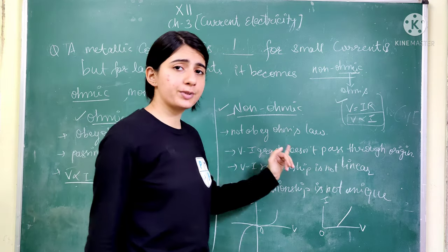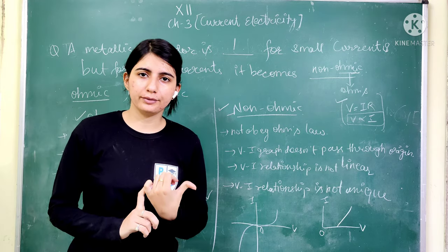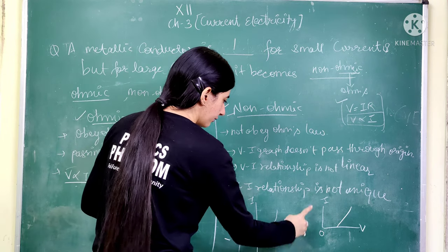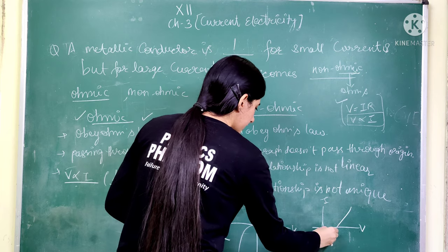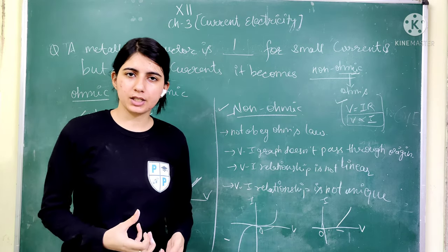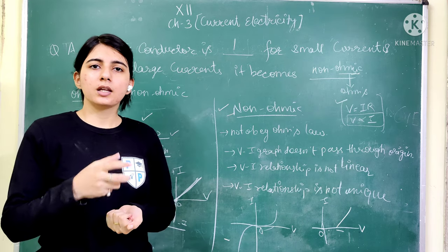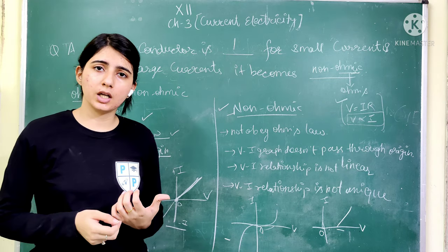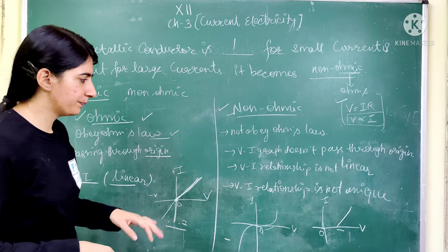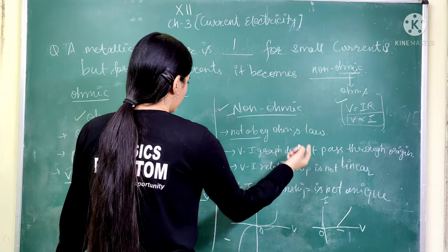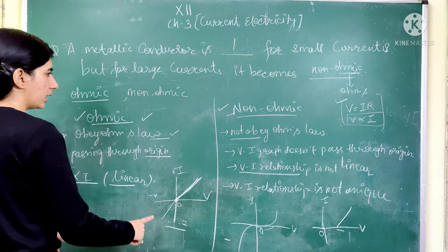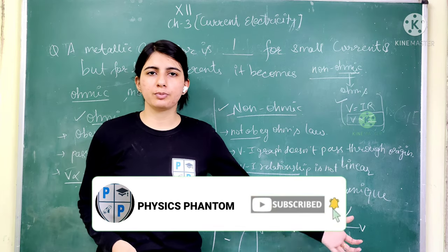The second type is non-ohmic conductors. Non-ohmic conductors do not obey V directly proportional to I. Their graph is not a straight line — it is curved. The V-I relationship is not linear in non-ohmic conductors. Also, the V-I relationship is not unique. For example, some graphs may have an origin but curve further, while others are more curved overall.